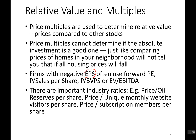Also, firms with negative earnings per share obviously can't use the P/E ratio, so sometimes they'll use the forward P/E if that's positive, or the price-to-sales ratio (since no one has negative sales), or price-to-book value per share, or enterprise value over EBITDA. There are also industry-specific ratios — for example, price per share divided by oil reserves per share for oil and gas companies, price per share over unique monthly website visits per share, or price per share over subscription members per share. You'd compare companies in a sector by their price relative to a relevant industry metric.